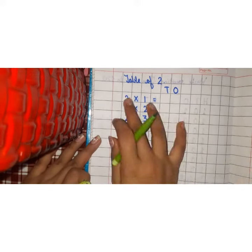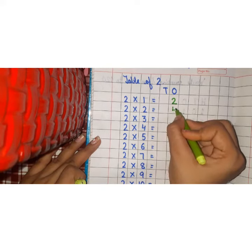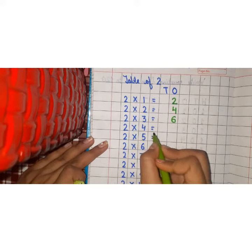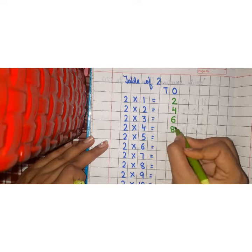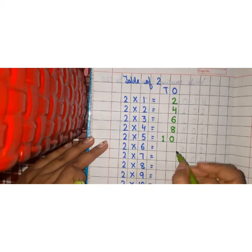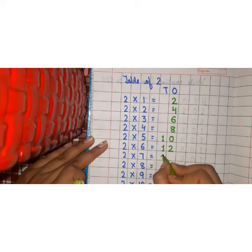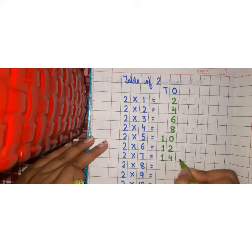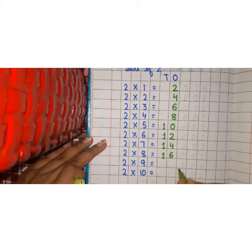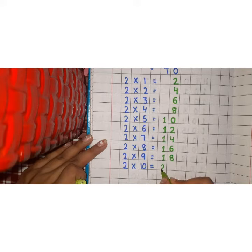Let's start. 2 ones are 2. 2 twos are 4. 2 threes are 6. 2 fours are 8. 2 fives are 10. 2 sixes are 12. 2 sevens are 14. 2 eights are 16. 2 nines are 18. 2 tens are 20.